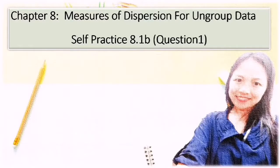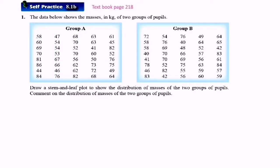In this video I will discuss self-practice at point 1B question number 1. The data below shows the masses in kilogram of two groups of pupils. We have group A and group B. Draw a stem and leaf plot to show the distribution of masses of the two groups of pupils. Comment on the distribution of masses of the two groups of pupils.